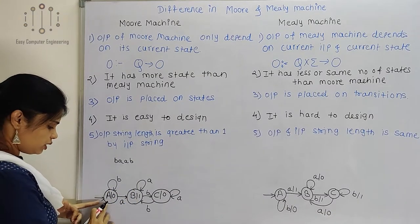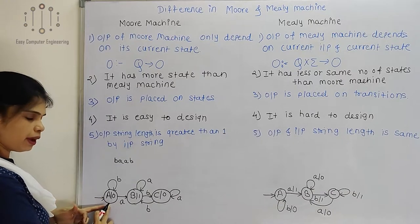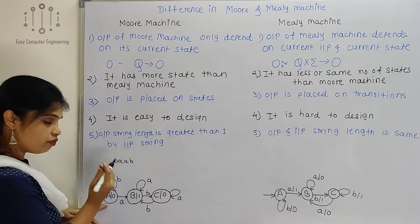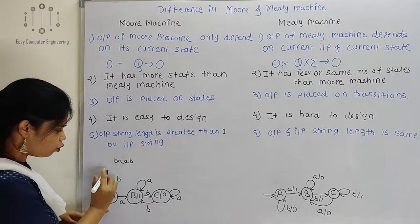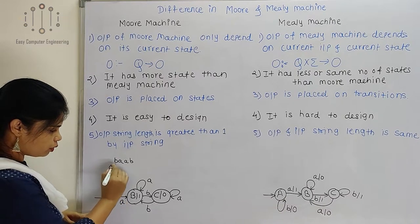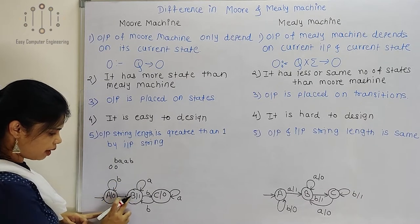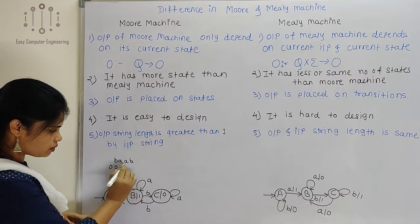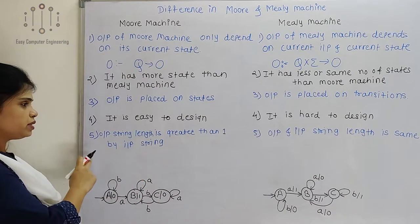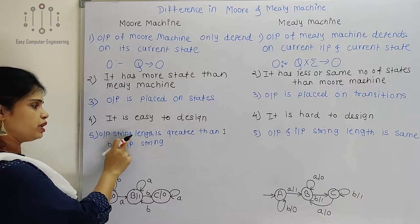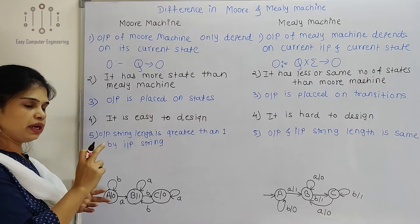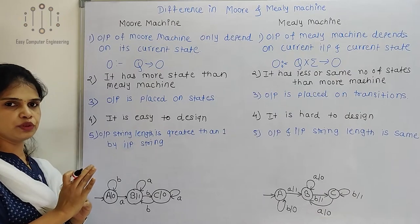The initial state is A. Immediately when I am at state A, even without accepting any input, I am getting output 0. Then on input B, output is 0; on next A, output is 1; on the next A, output is 1; and on B, output is 0. So the output string length is greater than input string length by 1 in Moore machine.